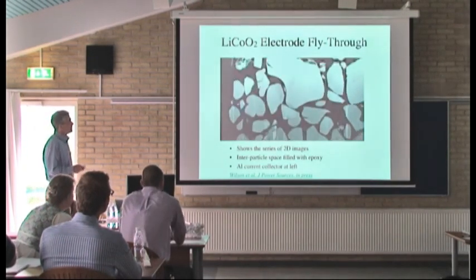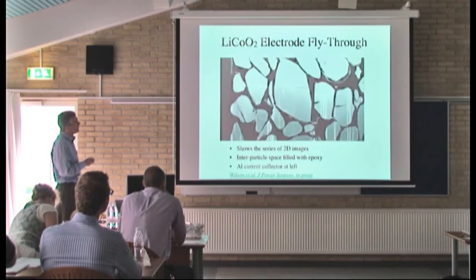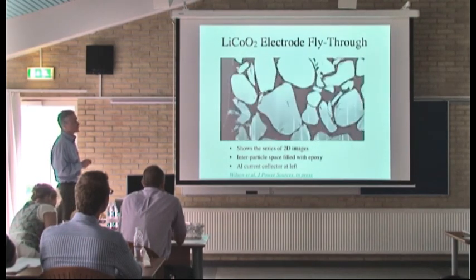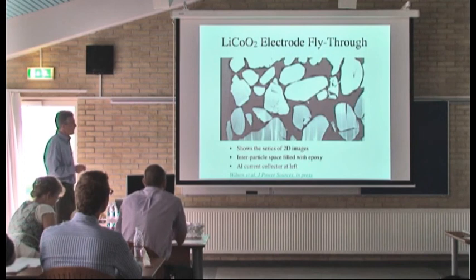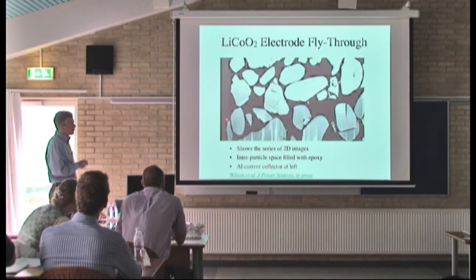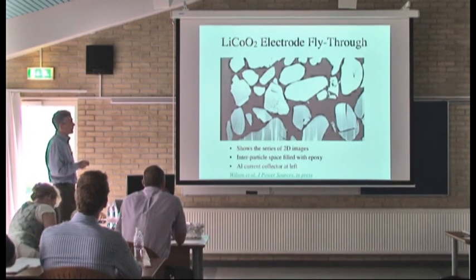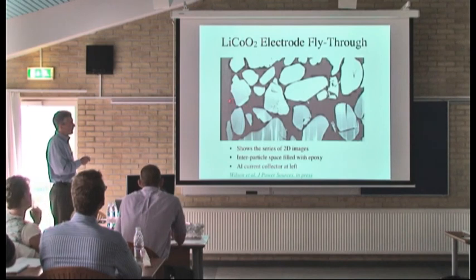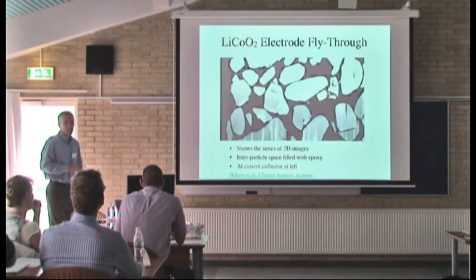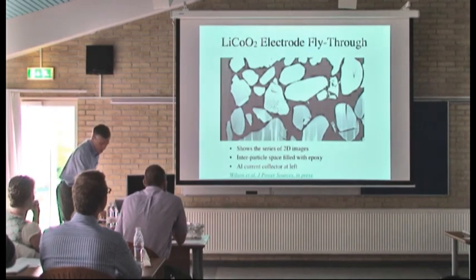Finally, we've been looking a little bit at battery structures. This is a fly-through of a positive electrode — lithium cobalt oxide, the standard positive electrode in a lithium-ion battery. We're seeing only the lithium cobalt oxide particles; everything else was infiltrated with epoxy, giving a uniform background. The troubling thing is that an actual battery is filled with liquid electrolyte, but also contains carbon black for electrical contact and binder materials, which all blend with the epoxy. So resolving those components is going to be a challenge.